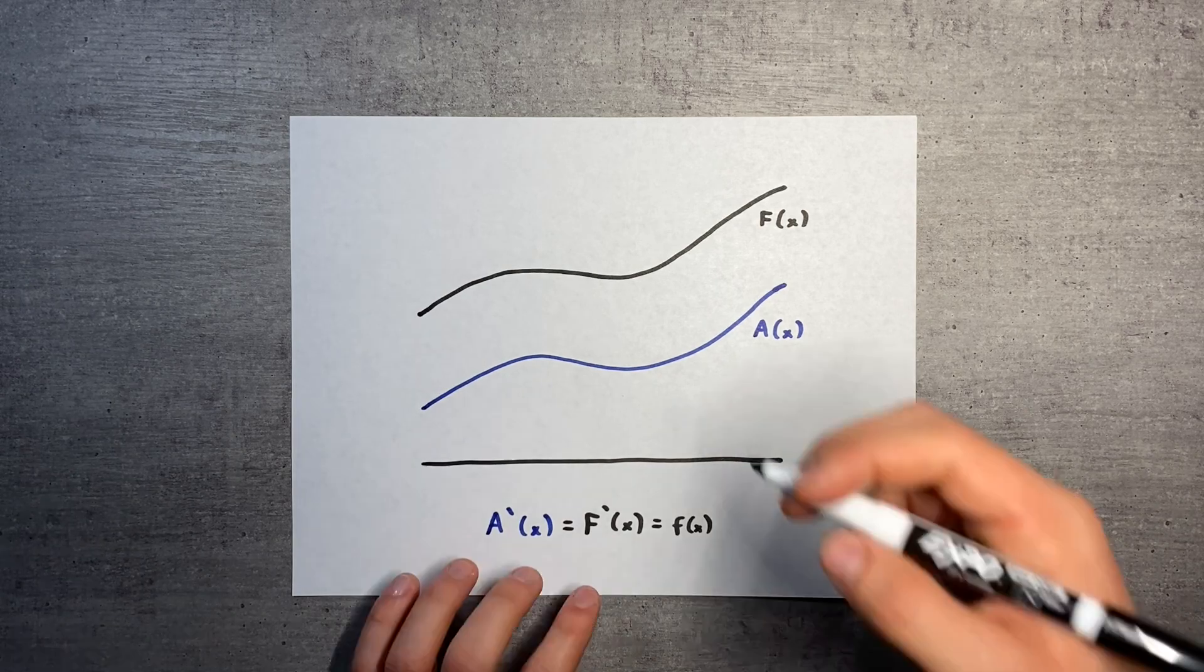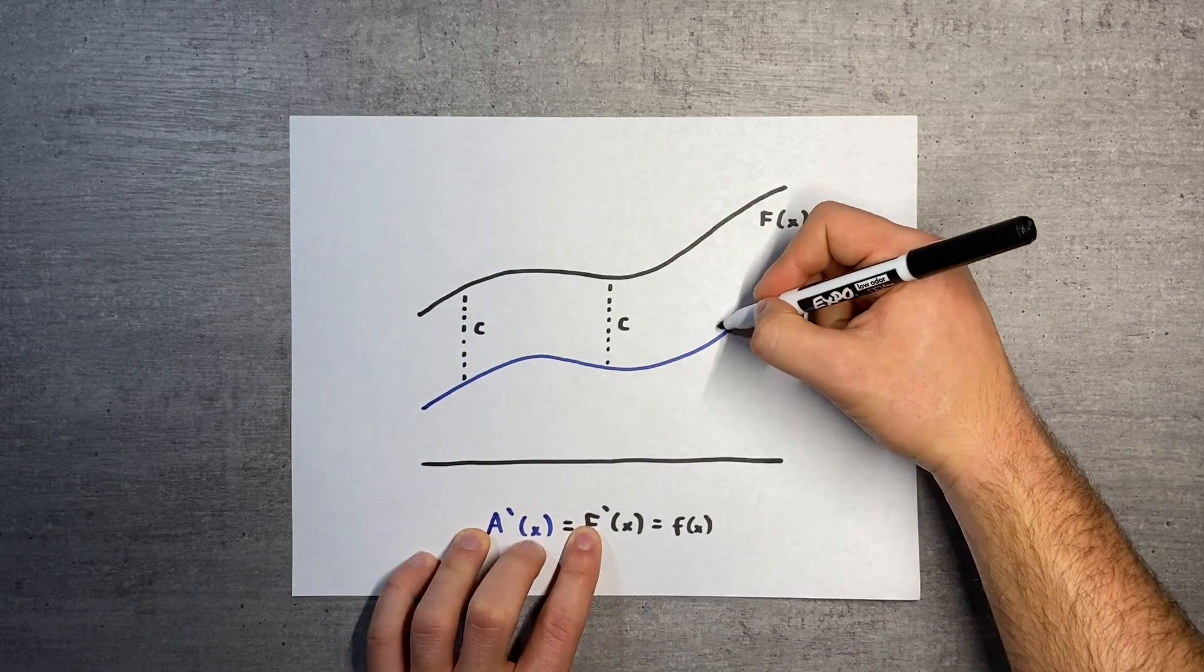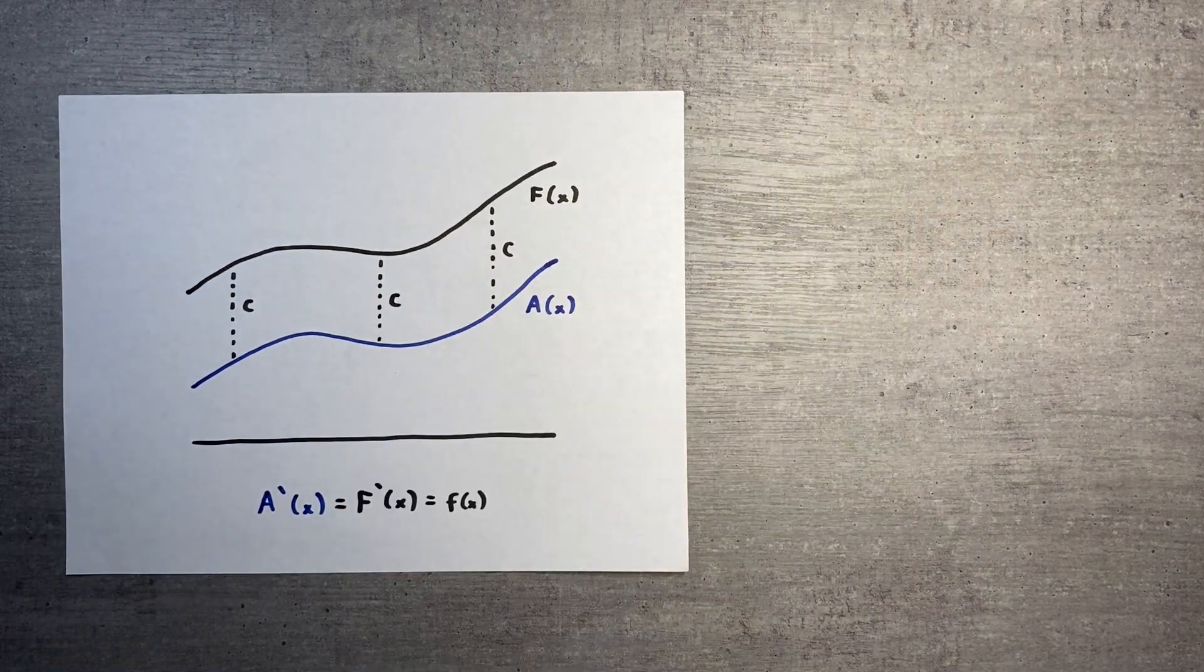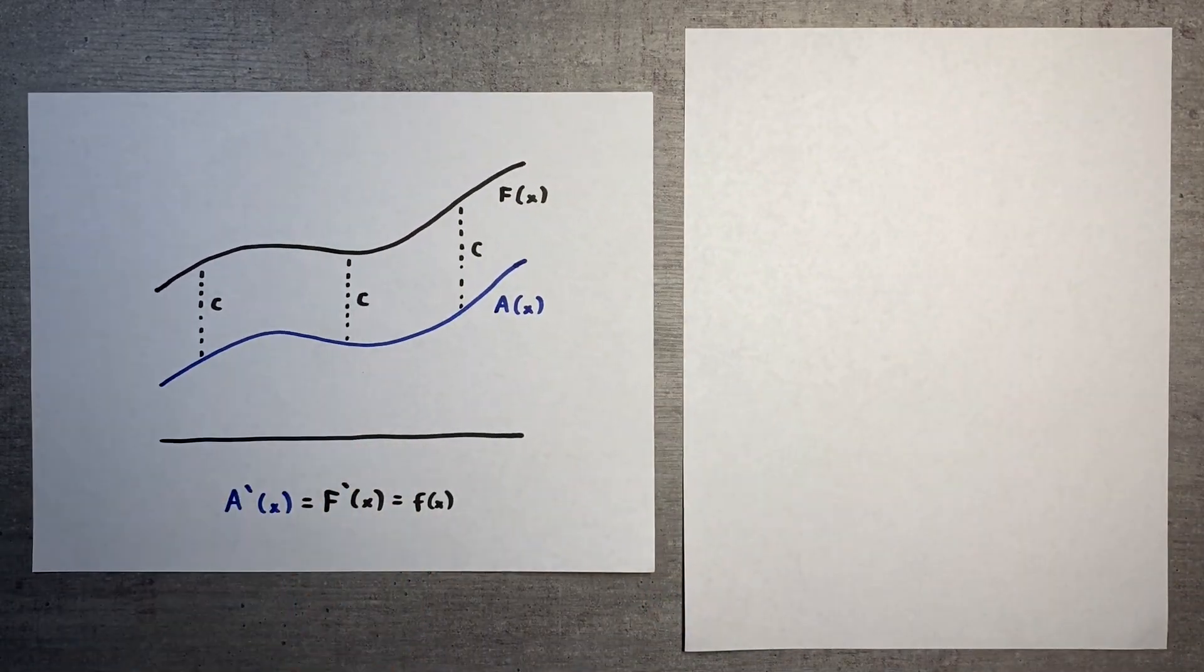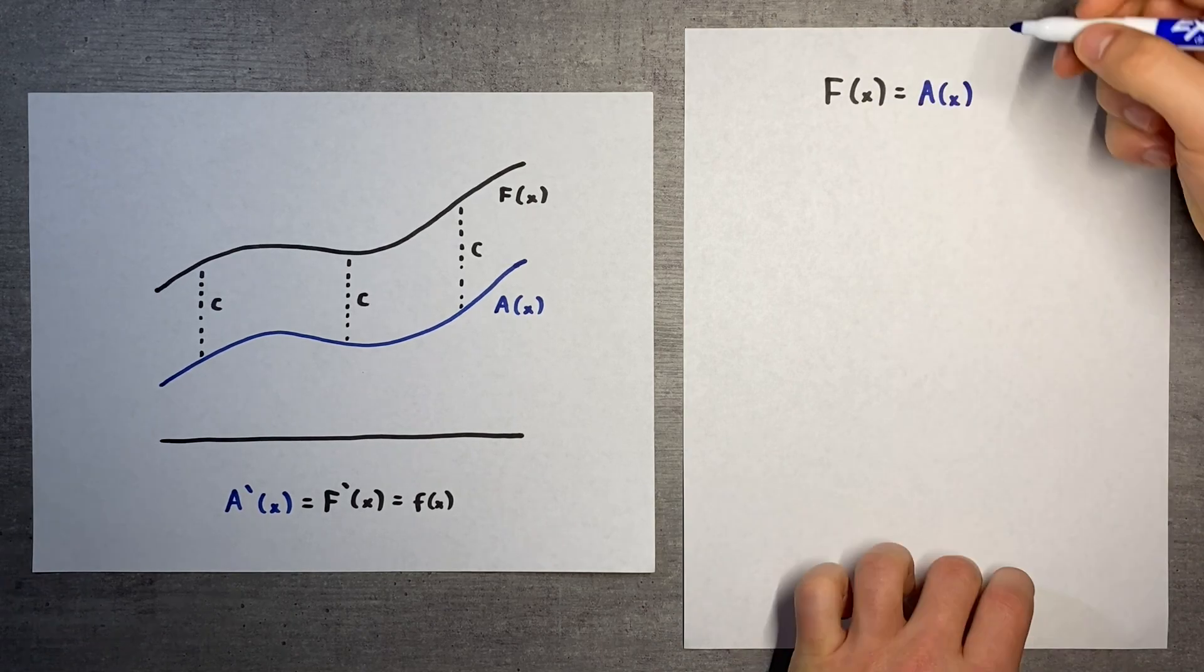This means that big F of x and A of x must be the same, except that one might be shifted by a constant amount. In other words, big F of x is equal to A of x plus C, where C is a constant.